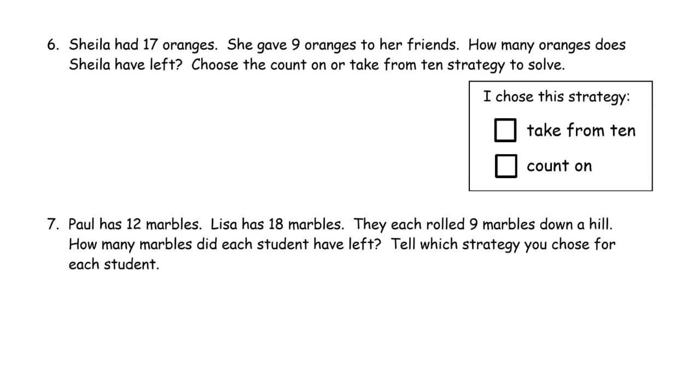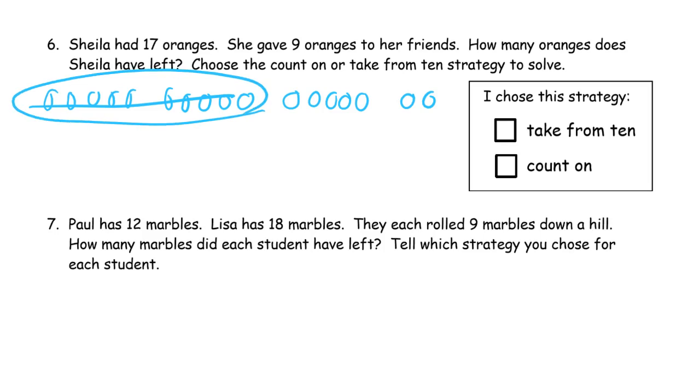Sheila had 17 oranges. She gave 9 oranges to her friends. How many oranges does Sheila have left? 17 and 9 are not very close. So 1, 2, 3, 4, 5, 6, 7, 8, 9, 10, 11, 12, 13, 14, 15, 16, 17 to draw the picture. 9, right, because I'm taking from this 10 here. There's one left. So that's the 7 from the 17, and one more, 8. 17 minus 9 equals 8. That was, I drew a picture of taking 10.